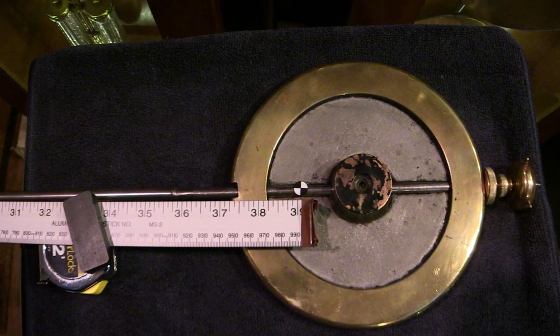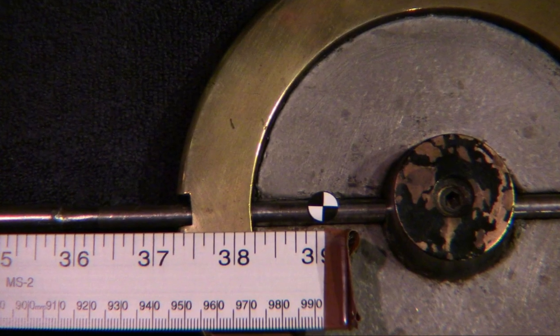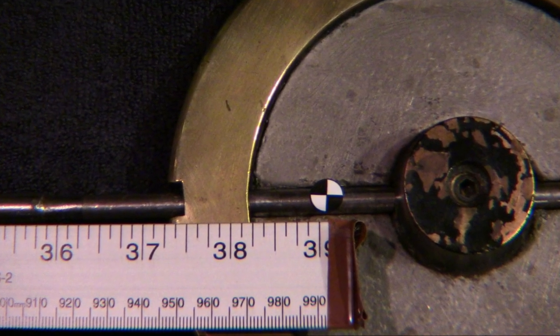Conveniently, a meter stick is just over 39 inches and works out well for helping to measure the center of gravity to the top of the pendulum.